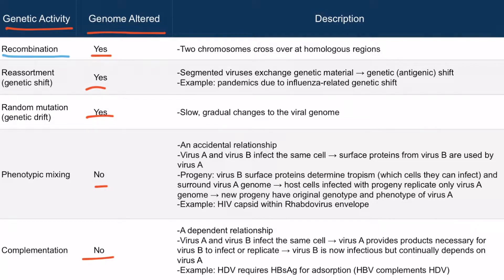Let's start by discussing recombination. This is the simplest form of genetic activity, and it's simply the crossing over of two viral genomes. This crossing over occurs at homologous regions. We typically refer to viral genomes as nucleic acids or genomes, but recombination can be thought of as the crossing over of chromosomes — both starting with C. If the actual genes have recombined, then the viral genome has been altered.